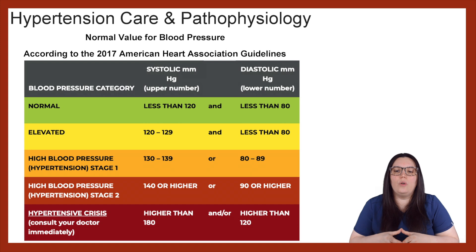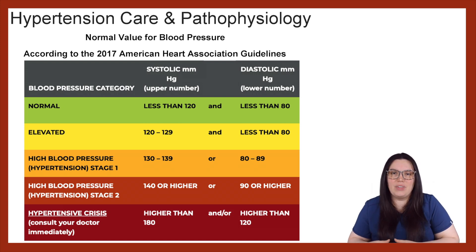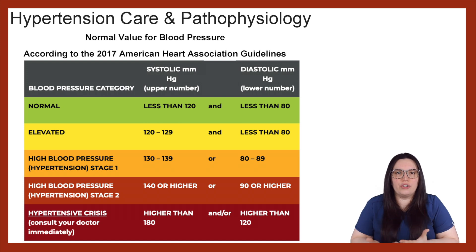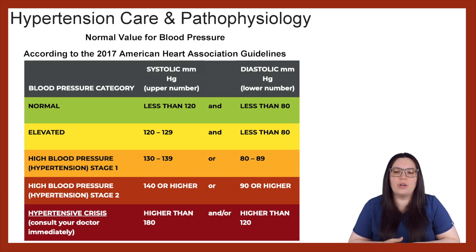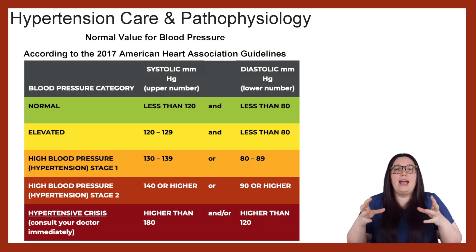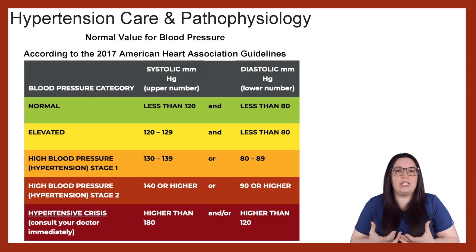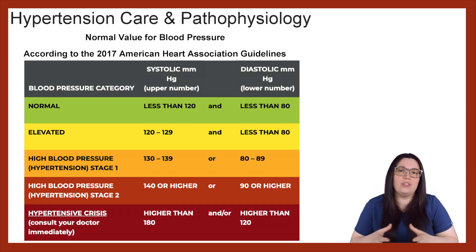Beginning with stage one, we're looking at a systolic blood pressure between 130 and 139 and a diastolic blood pressure between 80 to 89. We really don't overly concern ourselves with hypertension until we hit stage two. Once we hit stage two, we're looking at a systolic greater than 140 and diastolic greater than 90. That's usually when we start to worry a little bit about what's going on. However, if we don't treat the hypertension, we can eventually develop a hypertensive crisis, which is going to result in the patient being hospitalized.